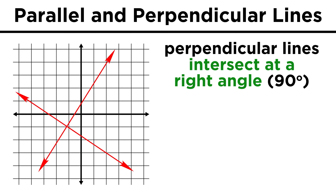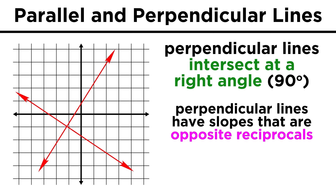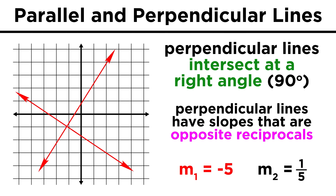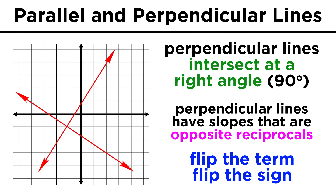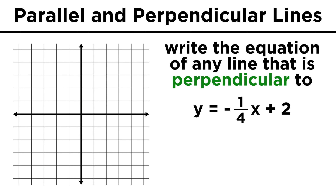On the other hand, two lines that intersect at a right angle are perpendicular to one another. The relationship between the slopes of perpendicular lines is not as obvious as it was for parallel lines, but as it turns out, perpendicular lines have slopes that are opposite reciprocals of one another. By opposite reciprocal, we mean that if one has a slope of two, the other has a slope of negative one-half. If one has a slope of negative five, the other has a slope of one-fifth. We flip the term and flip the sign.